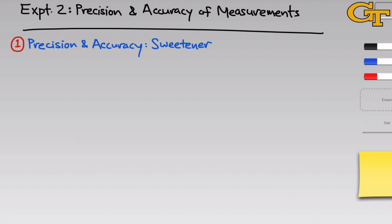In the first part of this experiment, we'll be massing packets of sweetener. If you look on a packet of artificial sweetener like Sweet'n Low, you'll notice that there's a mass printed on the packet — in our case, something like 1.0 grams. This is called the nominal mass of the contents of the packet. It's the mass in name only, and the manufacturer makes no guarantee that the actual mass is exactly 1.0 grams. It's just a ballpark figure.